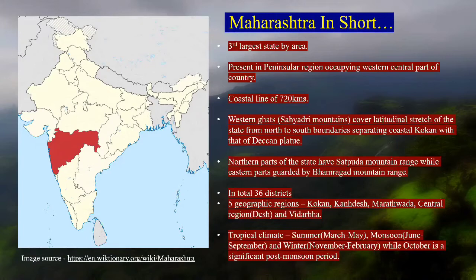The coastal region is called Kokan. The northern part is Khandesh. There is Marathwada, the central region which is a very large part of Maharashtra. And towards the east we have the Vidarbha region.